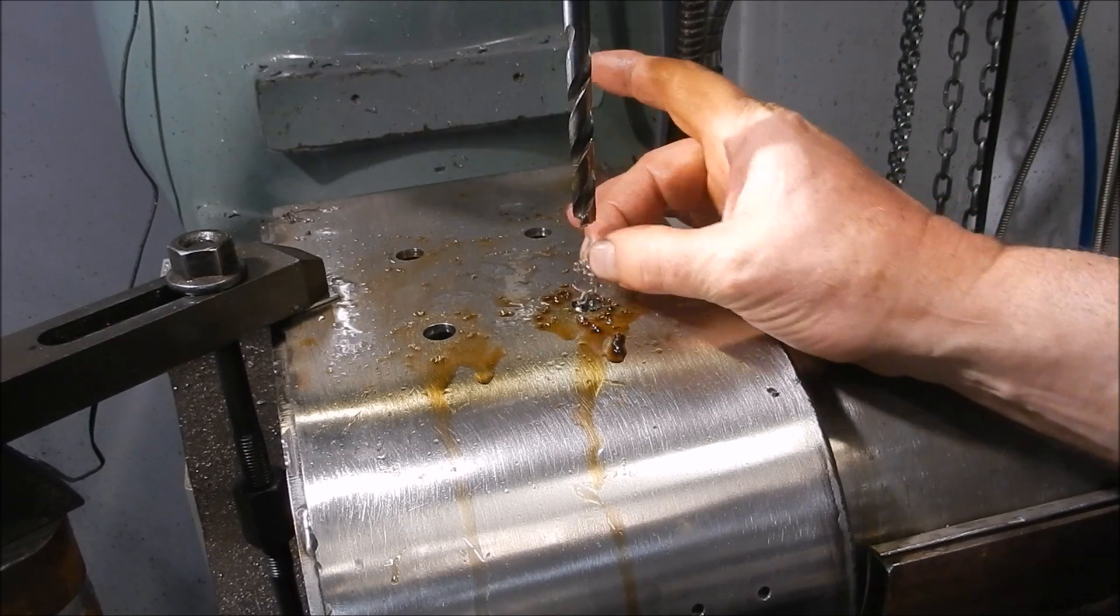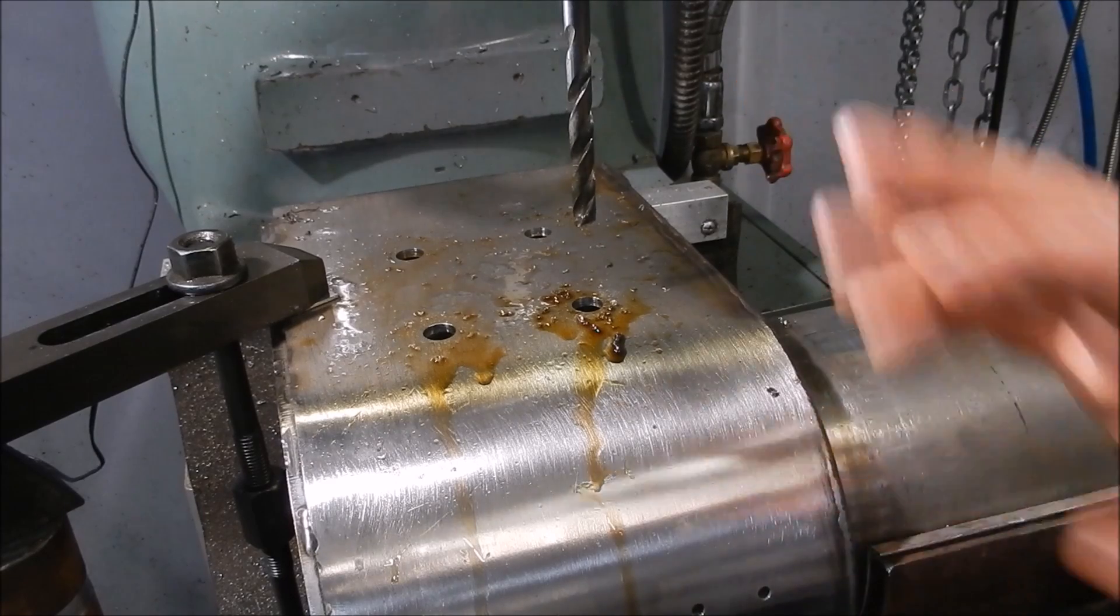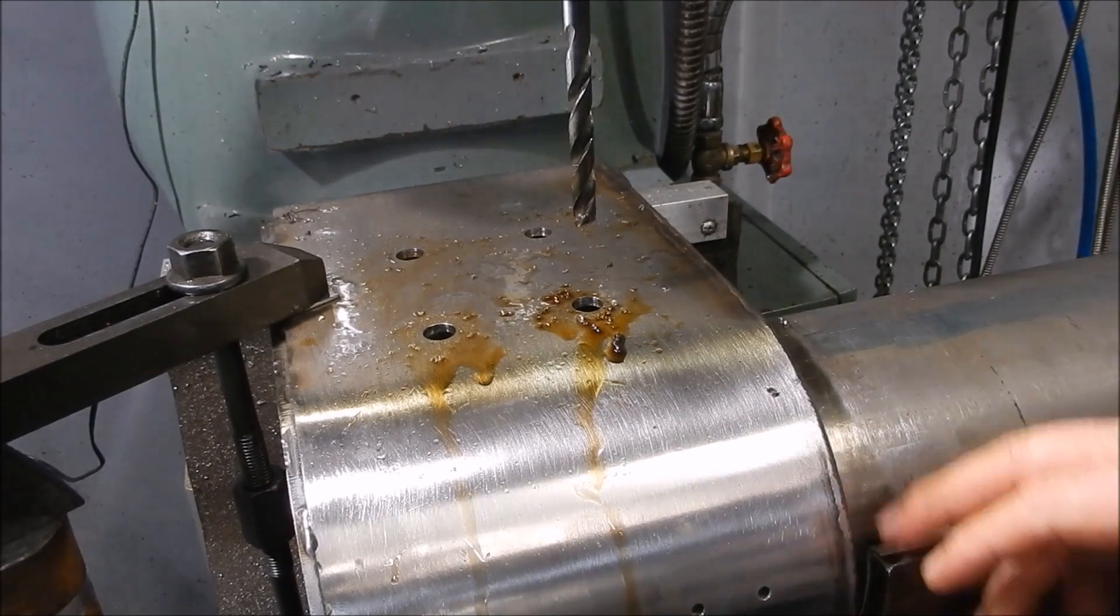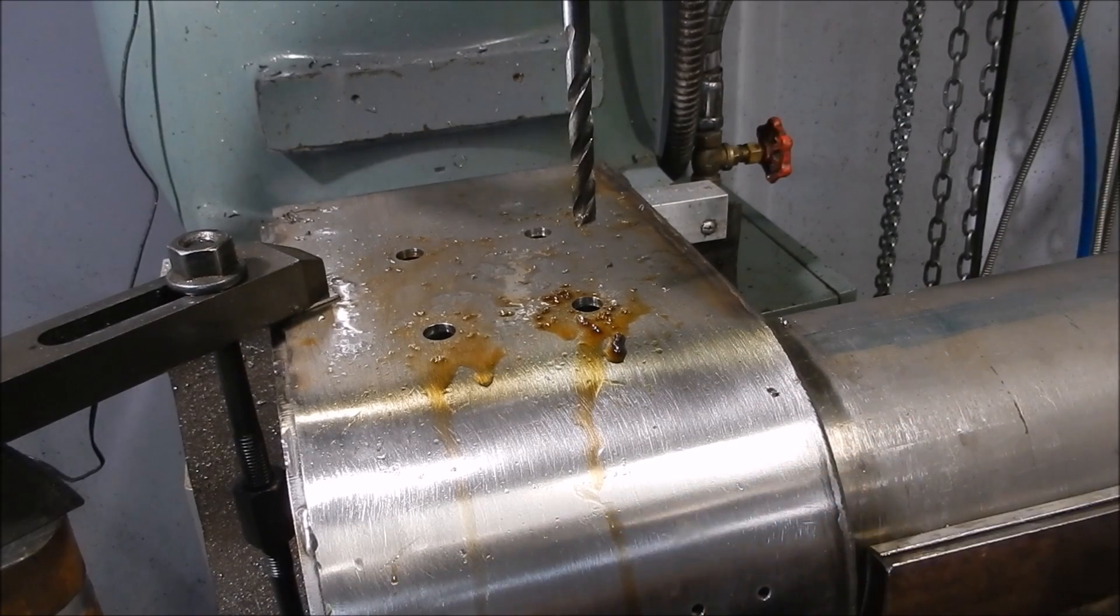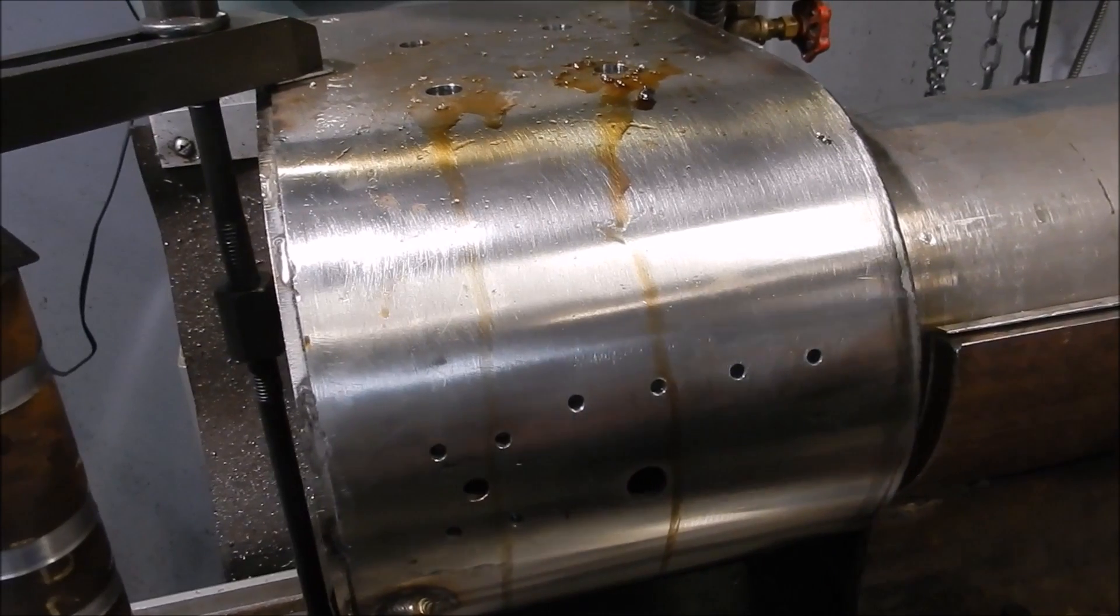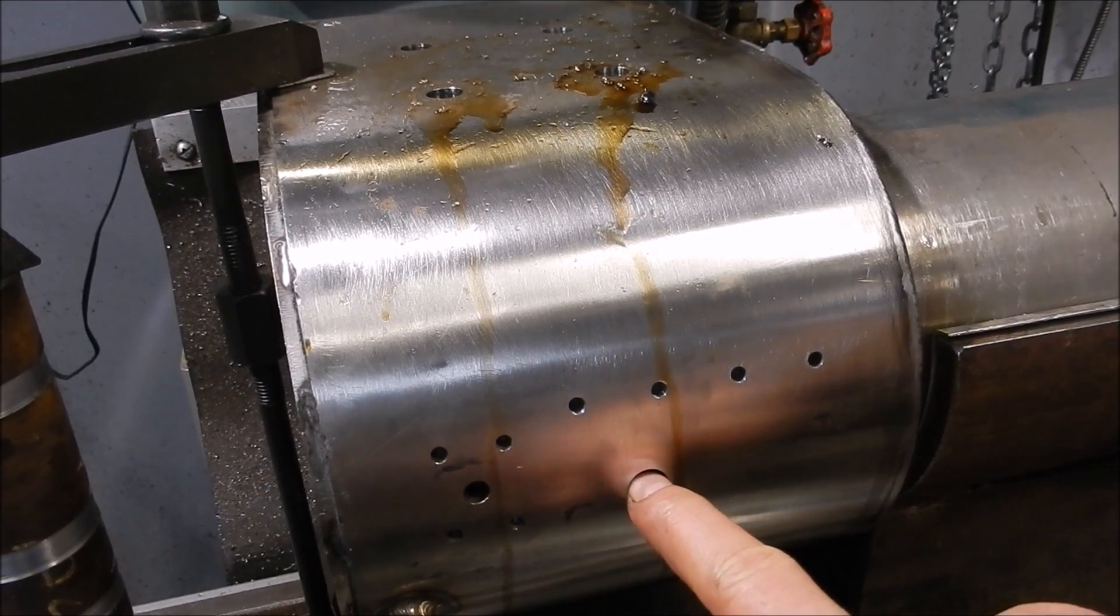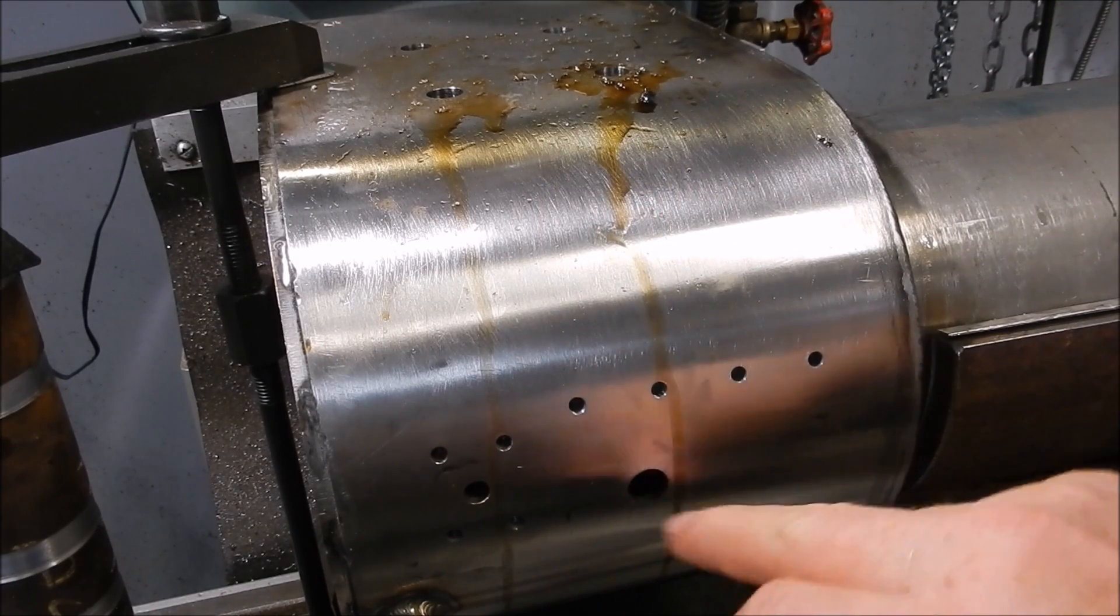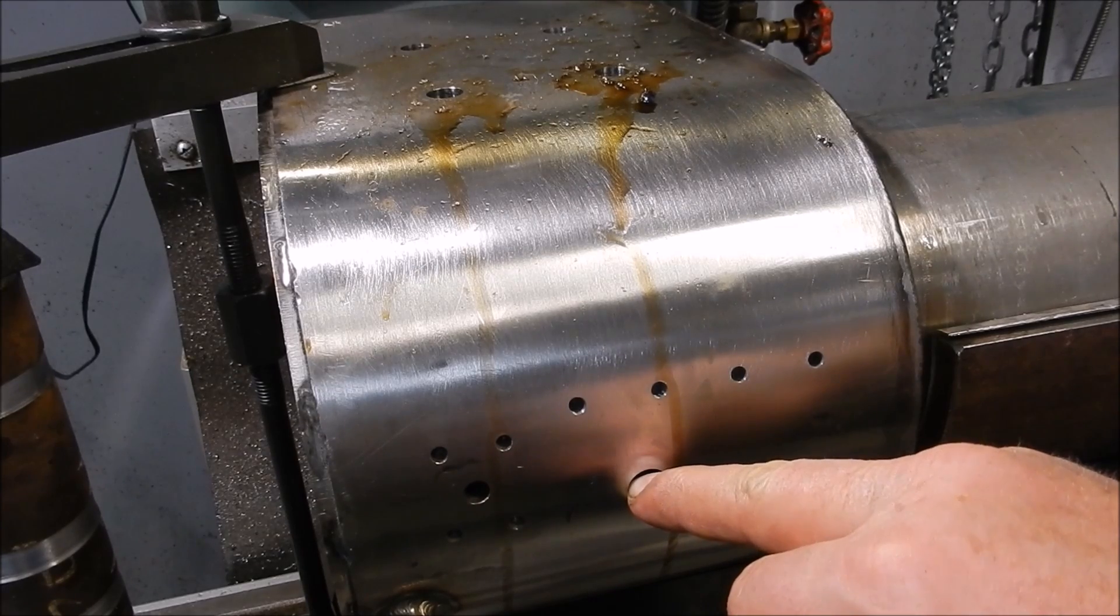Now the firebox has got to be taken out again, it's only tacked in place. So any swarf, burrs, anything can be cleaned up before it goes in for its final weld. I'll stay down the bottom here. It's too long for me to get the tap into so I will be drilling through and then leaving that. When the tacks are cut off and the inner firebox is removed then we'll tap that one then. Before it goes back in again for final weld up.